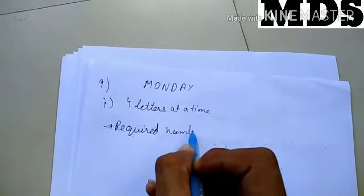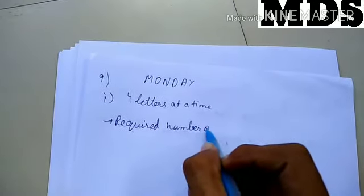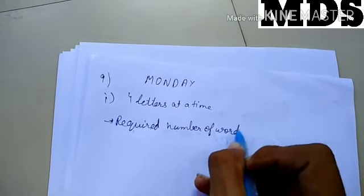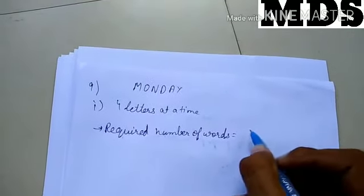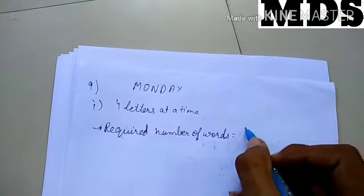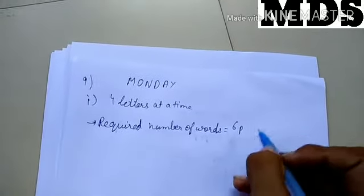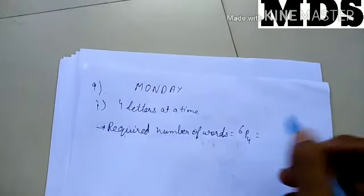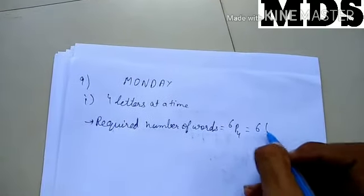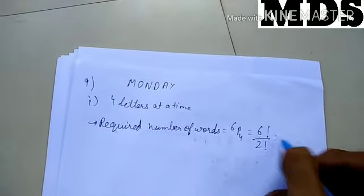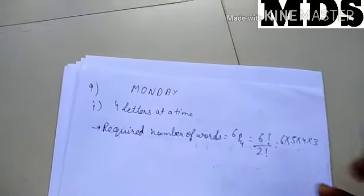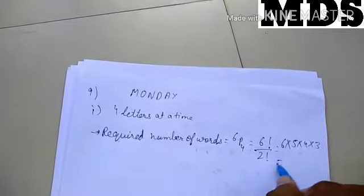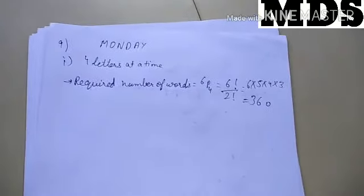For question 9, first part: words with 4 letters. Required number of words equals 6P4. This means 6 factorial by 2 factorial, which is 6 × 5 × 4 × 3 = 360. So 360 total words can be found.